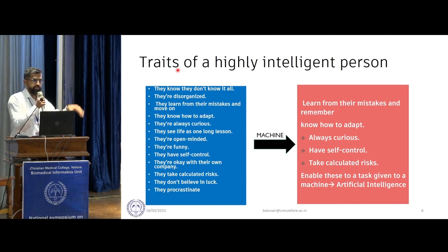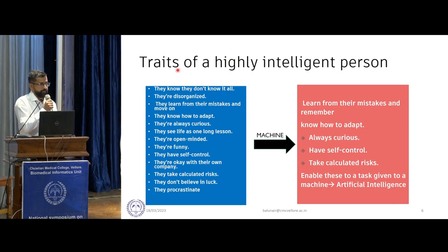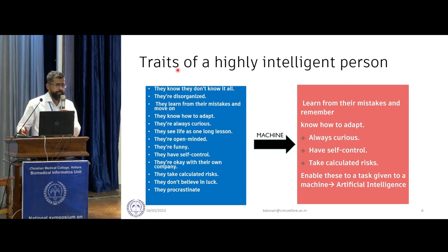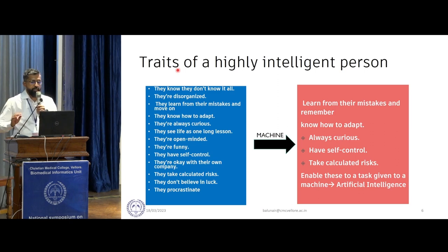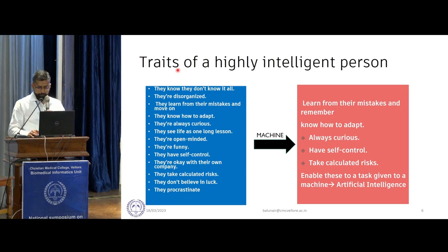I list out the traits of an intelligent person, but we don't have to transfer all of these to the machine — just a few things. Yesterday we saw a machine beating a Go player or chess player. We don't want that machine to pass humorous jokes or sarcasm in between — that is a human job. Machines are task-oriented and just need to learn from mistakes in that domain and then do better. This is artificial intelligence in my view.